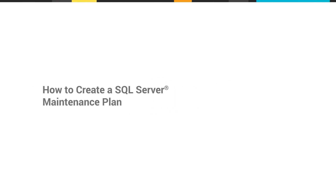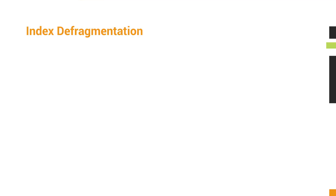This video shows you how to reduce index fragmentation in the SolarWinds Orion database. Indexes are used to help Orion find data quickly when pulled from the database. Index defragmentation should be performed on any heavily used database on a routine basis.